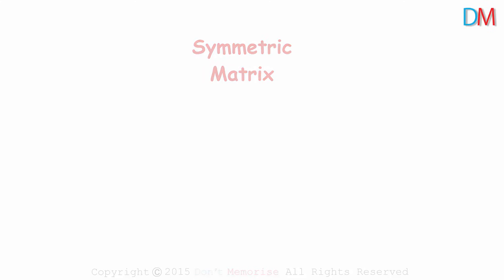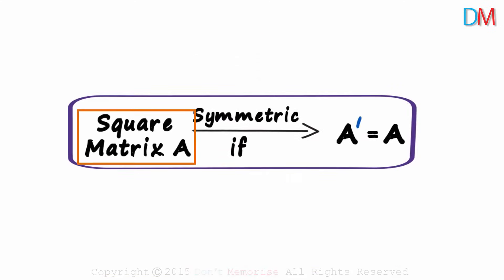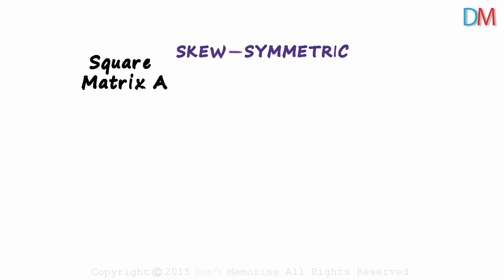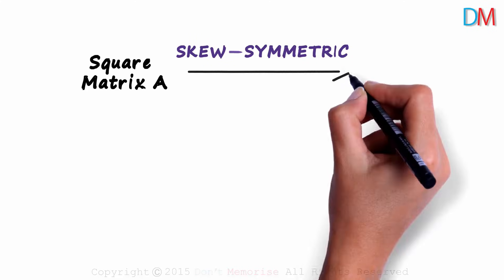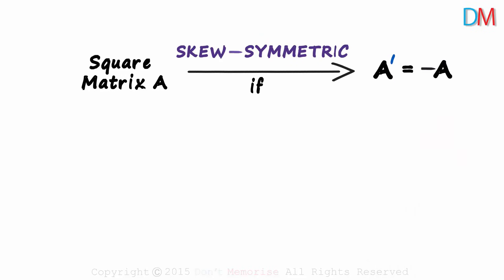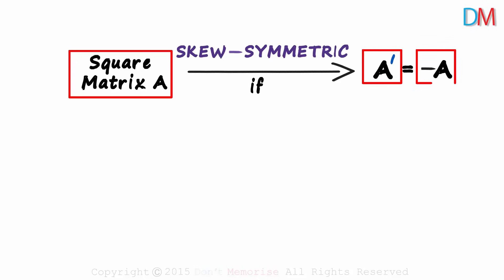In the previous session, we saw what a symmetric matrix is — a square matrix A is symmetric if A transpose equals A. In this session, we will look at what a skew symmetric matrix is. A square matrix A is skew symmetric if A transpose is equal to negative A.